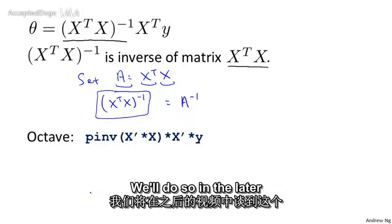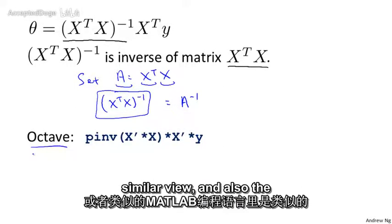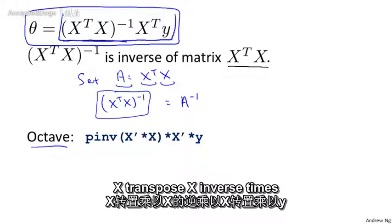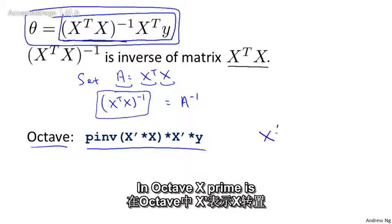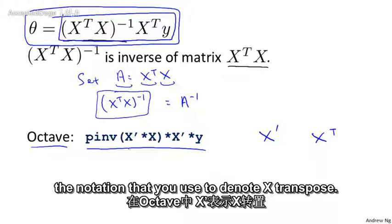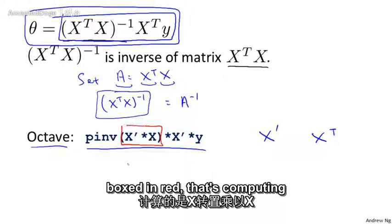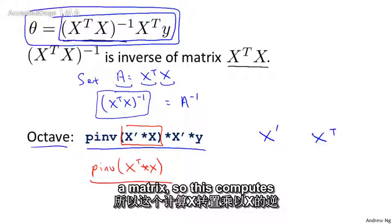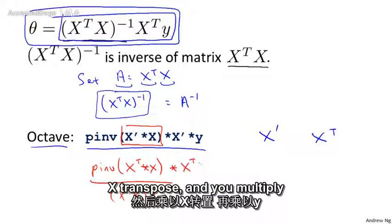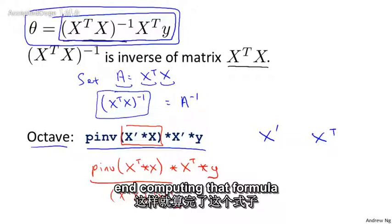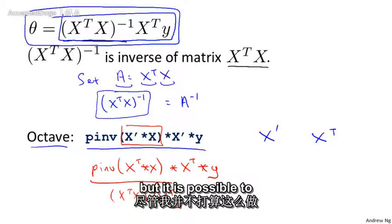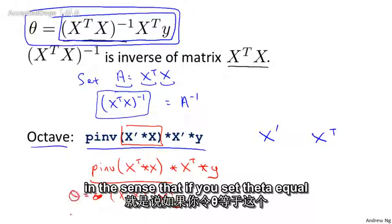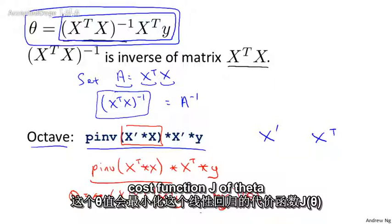We haven't yet talked about Octave, but in the Octave programming language — or similarly in MATLAB — the command to compute theta is: pinv(X' * X) * X' * y. Here, X prime denotes X transpose, and pinv is the function for computing the inverse of a matrix. It's mathematically provable that this formula gives you the optimal value of theta that minimizes the cost function J of theta for linear regression.